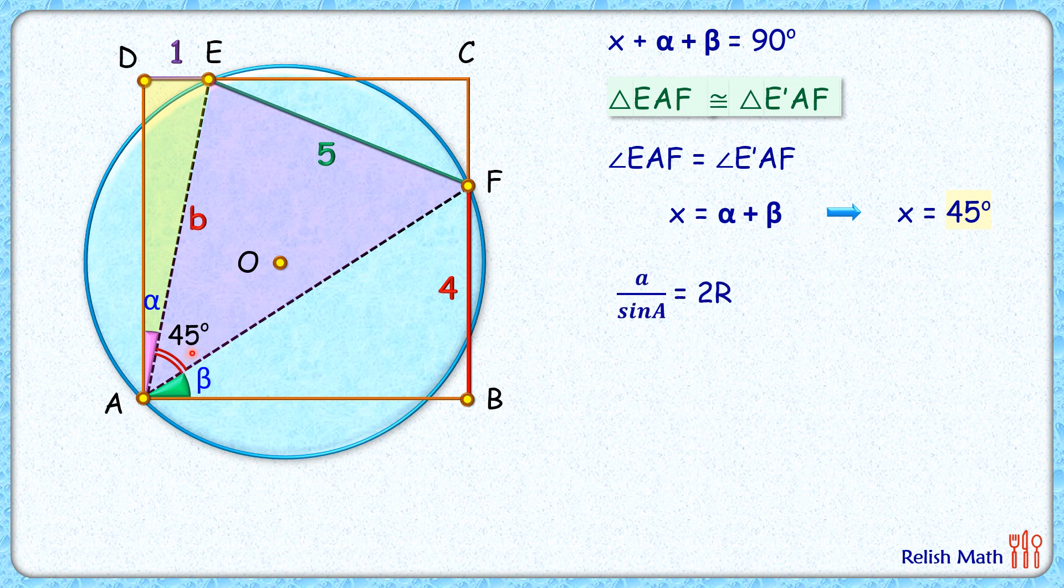In this triangle, if we apply the extended sine rule, it says that a/sin(a) = 2R, where 2R is the circumcircle radius. So for this pink triangle, the blue radius is the circumcircle, the value of 'a' is 5, and this angle is 45°.